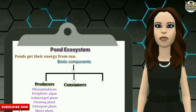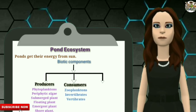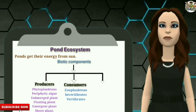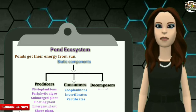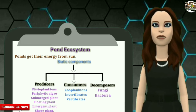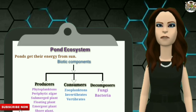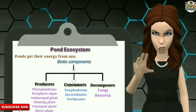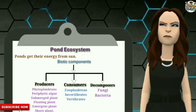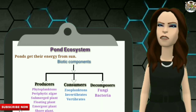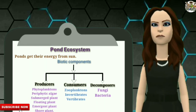The second is consumers, which include zooplankton, invertebrates, and vertebrates. The third is decomposers. Animal waste and dead and decaying plants and animals form the detritus on the bottom of the pond. Decomposers, also known as detritivores, are bacteria and other organisms that break down detritus into materials that can be used by primary producers.